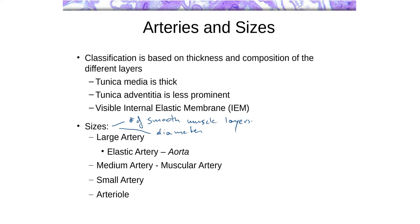Arteries tend to be differentiated from veins in that they have a very thick tunica media — the tunica media is the main component within arteries. The tunica adventitia is a little bit less prominent. The tunica intima is never really very prominent in most of these blood vessels; you barely see it in most cases. What we tend to see with most arteries and veins is just the tunica media and tunica adventitia.